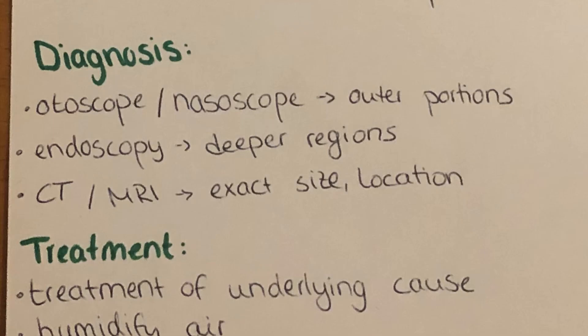Diagnosis of polyps is done by autoscopy or a nasoscope for the outer portions. If deeper regions of the nose need to be visualized, an endoscope can be used. With the aid of a CT or MRI, the exact size and location of a nasal polyp can be determined.